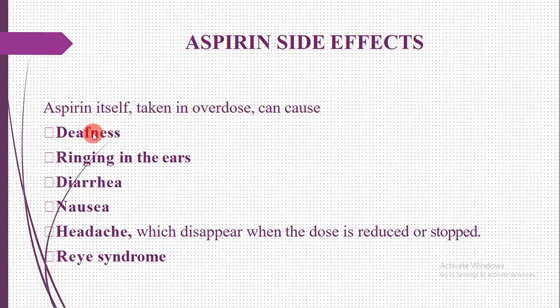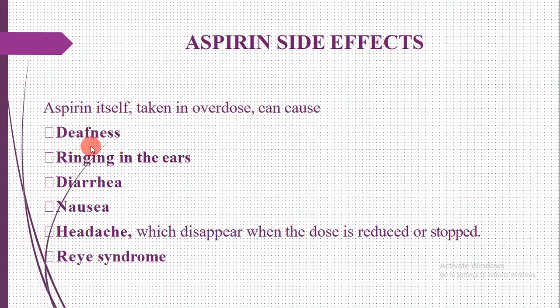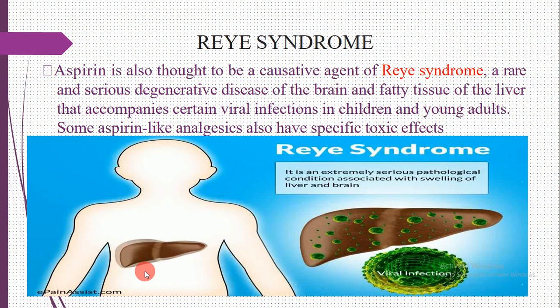These are the side effects of aspirin itself in overdose: deafness — meaning you cannot hear — ringing in the ears, diarrhea, nausea, and headaches, which disappear when the dose is reduced or stopped. There may also be a chance of Reye's syndrome.